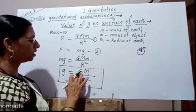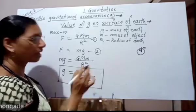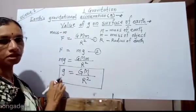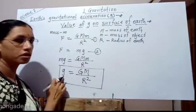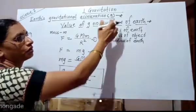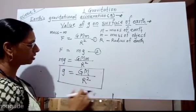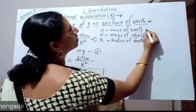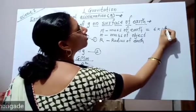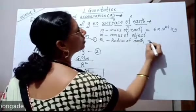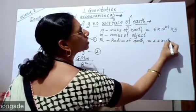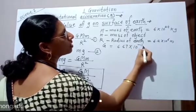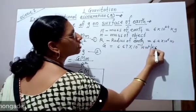So g equals capital G (universal gravitational constant) times capital M (mass of earth) divided by R (radius of earth) squared. To find the value of small g on the surface of the earth, we substitute known values: mass of earth is 6 × 10²⁴ kg, radius of earth is 6.4 × 10⁶ m, and universal gravitational constant G is 6.67 × 10⁻¹¹ N·m²/kg². Substituting these values: g equals 6.67 × 10⁻¹¹ times 6 × 10²⁴ divided by (6.4 × 10⁶) squared.